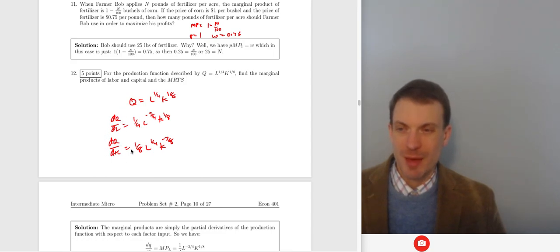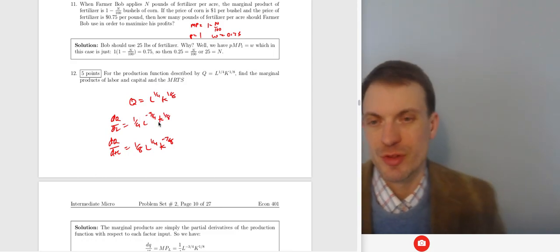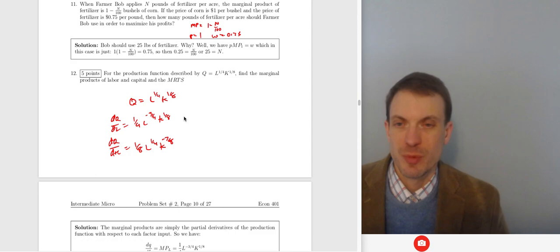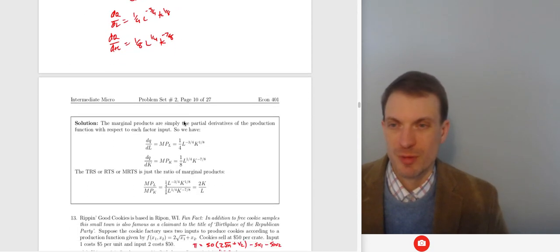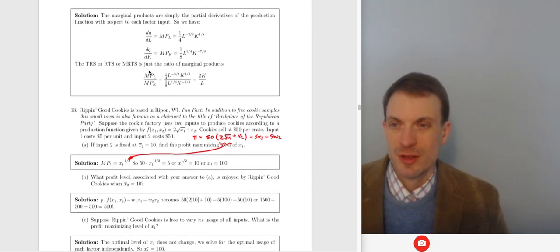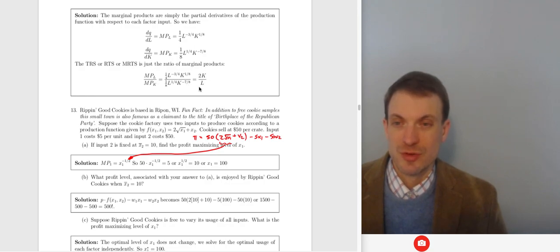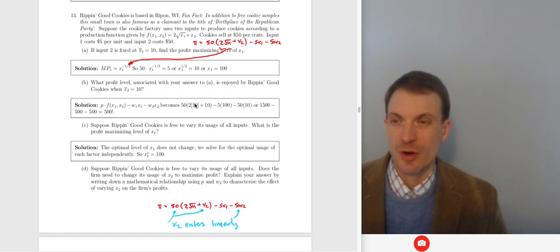The marginal product of labor is dq/dL and marginal product of capital is dq/dK. Taking the derivative with respect to labor gives (1/4)L^(-3/4)·K^(1/8), and with respect to capital gives (1/8)L^(1/4)·K^(-7/8) — you bring down the exponent and reduce it by one. The MRTS is the ratio: (1/4)/(1/8) = 2, then L^(-3/4 - (-1/4)) = L^(-1) in the denominator, and K^(1/8 - (-7/8)) = K in the numerator, giving MRTS = 2K/L.